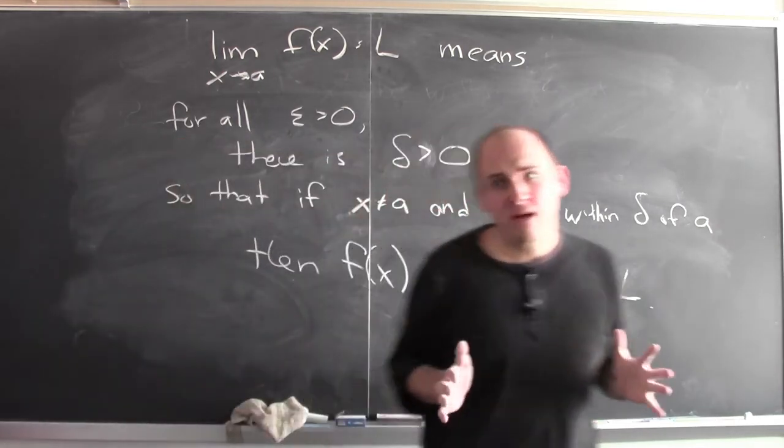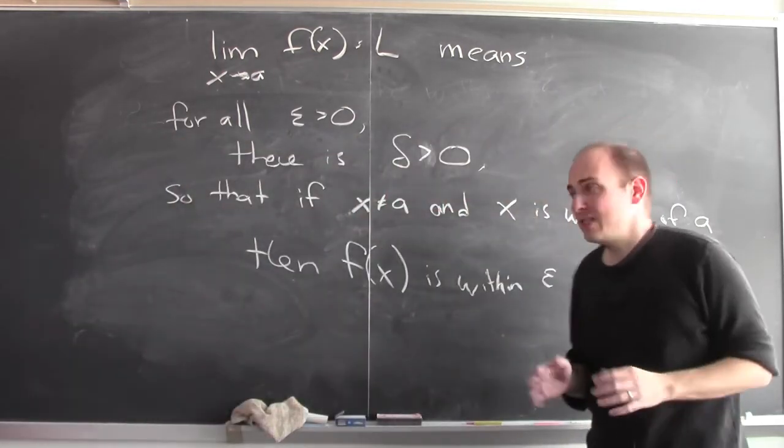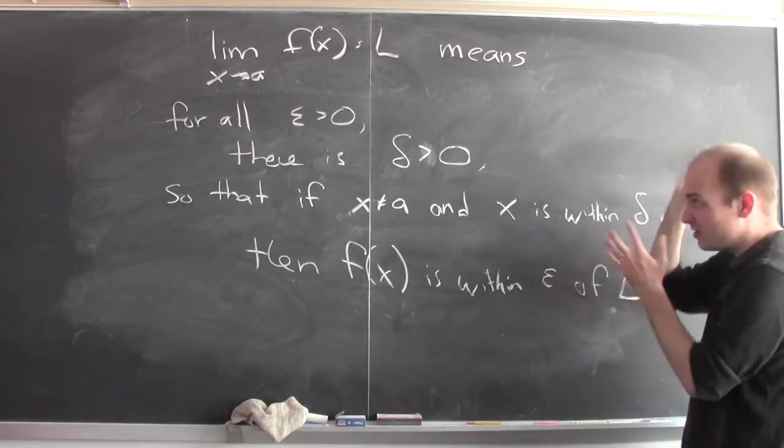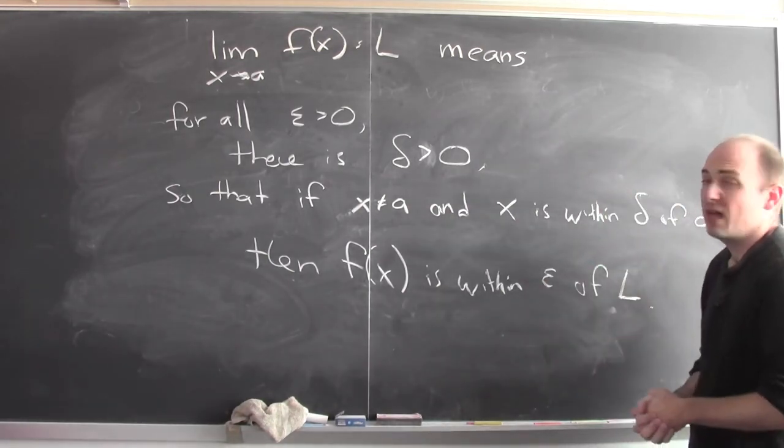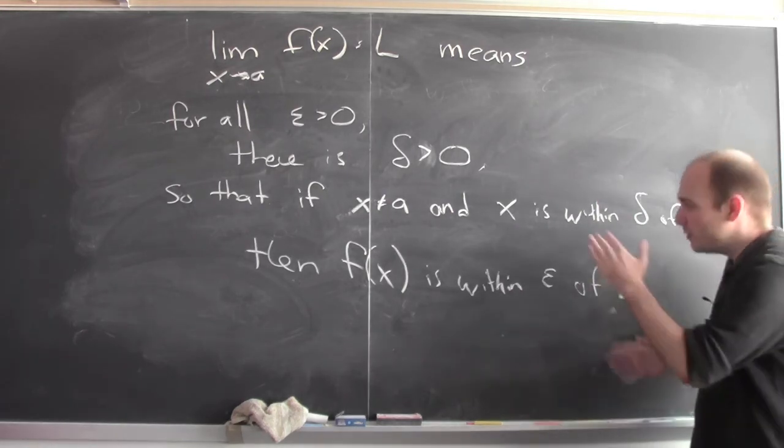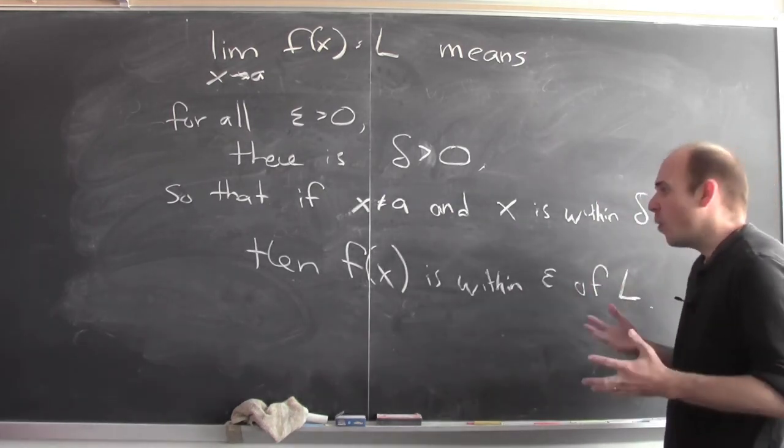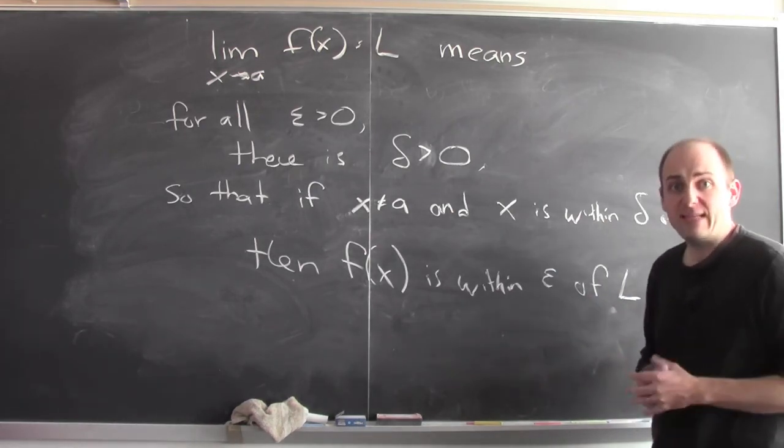Now how this actually gets played out in more concrete situations can be kind of complicated. But this is really the official definition of what it means to say that the limit of f(x) equals L as x goes to a. And we're going to be trying to unpack this definition to see what it might mean in some specific cases.